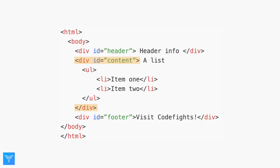The list item, item one, is contained inside the content div, as well as inside the unordered list tag. Each element's parent is the smallest element that contains it.